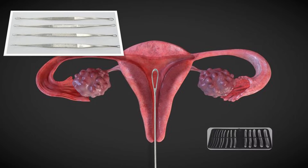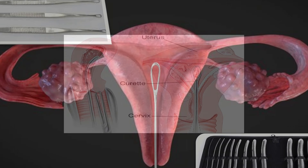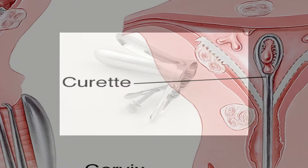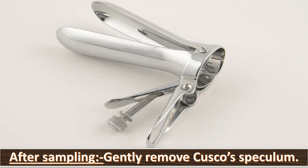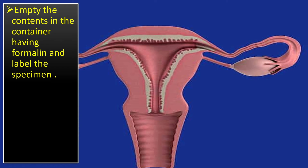Use graduated dilators only if the curette cannot pass — begin with a smaller dilator and end with a larger one to ensure adequate dilation of usually 10 to 12 mm. Evacuate the contents of the uterus with a large curette or ring forceps. Gently curette the walls of the uterus until a grating sensation is felt. After sampling, gently remove the Cusco speculum.